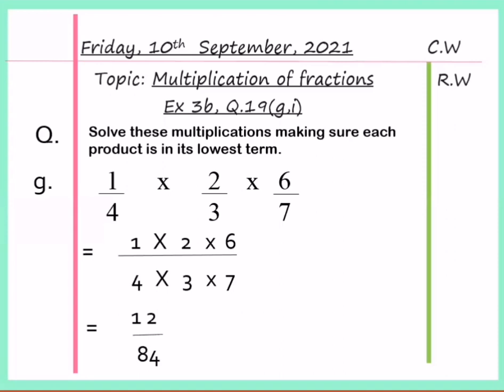This fraction can be reduced by 12, 6, or 2. But here we will use 12. When we divide 12 by 12, we get 1. And when we divide 84 by 12, we get 7. So the answer is 1 over 7. Now, next part.